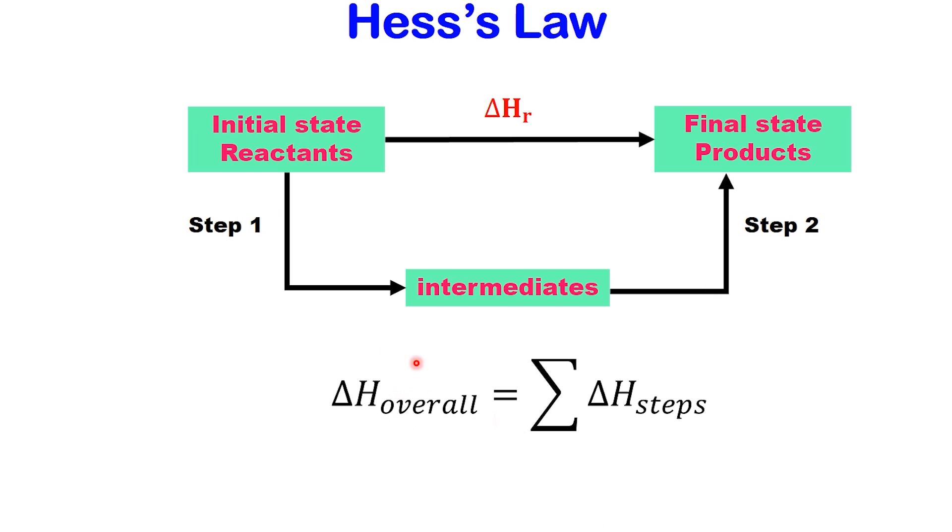Mathematical form: delta H overall equals the sum of the delta H values for the steps. This means that if we know the enthalpy changes for a series of steps, we can simply add them to find the total enthalpy change.